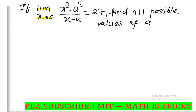So, x³ minus e³ divided by x minus e equals 27. e goes to a possible value. We can solve the problem from the left side. The formula is not directly the same, so we will see the formula.